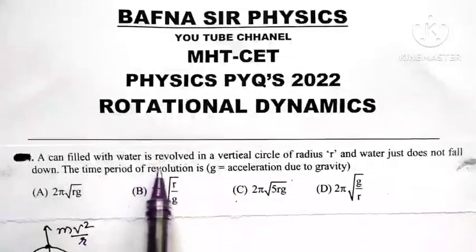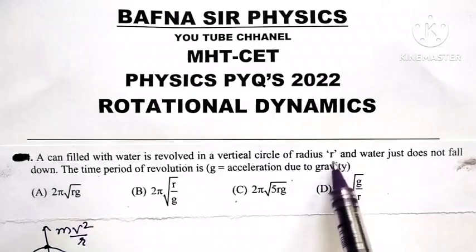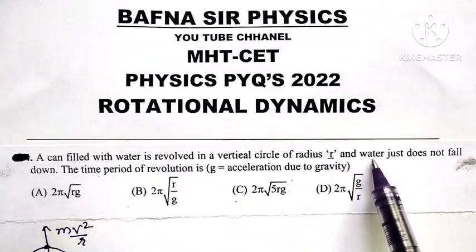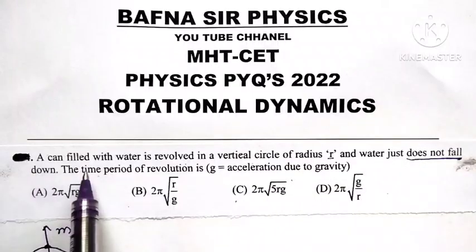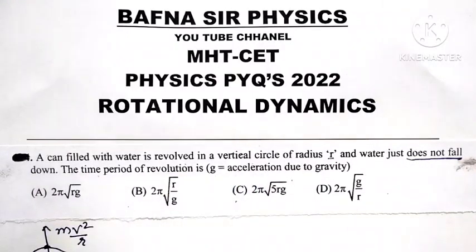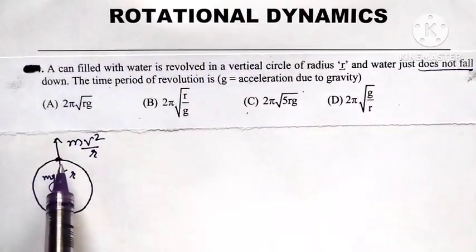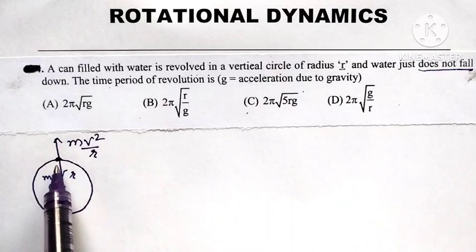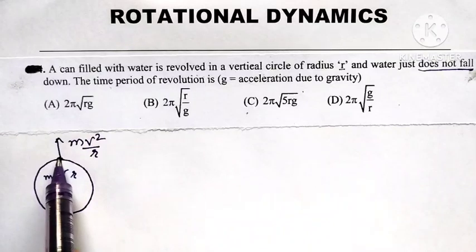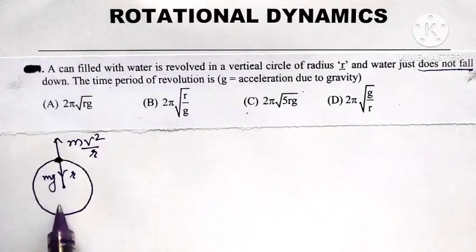A can filled with water is revolved in a vertical circle of radius r and water just does not fall down. The time period of revolution is, where g is acceleration due to gravity. So, it is revolving in a vertical circle and we want that when the can is at the highest position, the water does not fall.